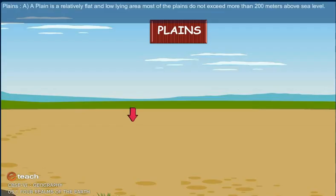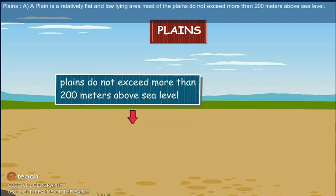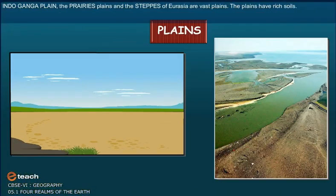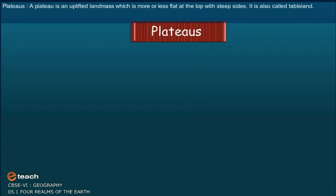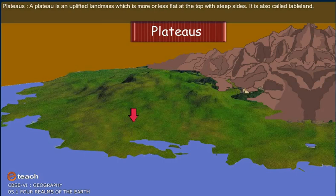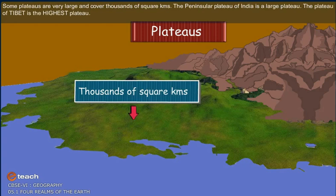A plain is a relatively flat and low-lying area. Most plains do not exceed more than 200 metres above sea level. The Indo-Ganga plain, the Prairies plains, and the steppes of Eurasia are vast plains. The plains have rich soils. A plateau is an uplifted land mass which is more or less flat at the top with steep sides, also called table land. Some plateaus are very large and cover thousands of square kilometres. The peninsular plateau of India is a large plateau, and the plateau of Tibet is the highest plateau.